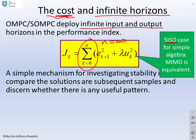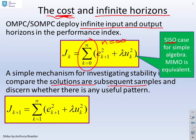Now, a simple mechanism for investigating stability is to compare the solutions you get to minimizing this J at subsequent samples and have a look and see, is there any useful pattern? So I'm going to say, I've got J at k plus 1. That shouldn't be an n, that should be an infinity.